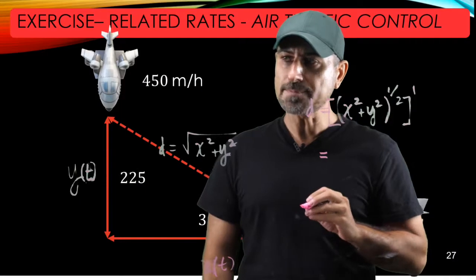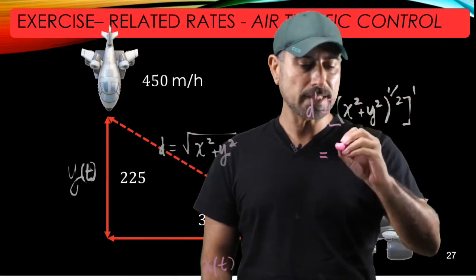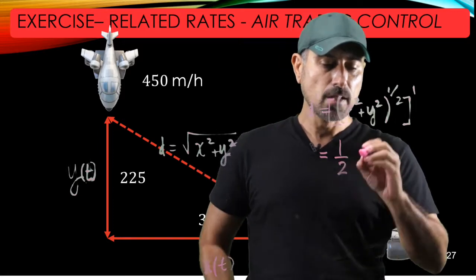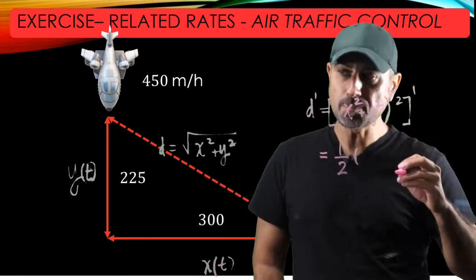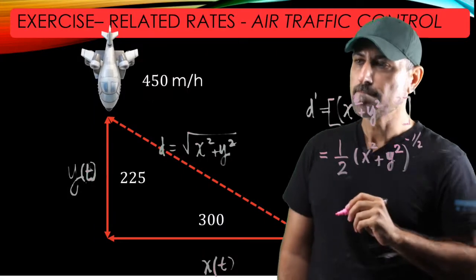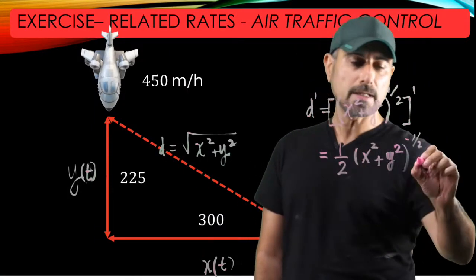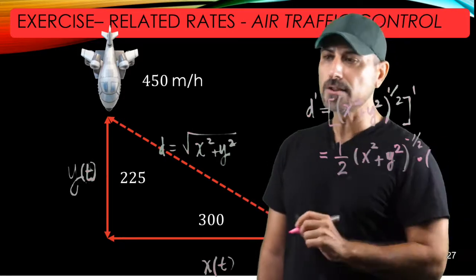The generalized power rule states that we just put the exponent here, one-half, and then we subtract one from the power. So this is one-half X squared plus Y squared to the power of minus one-half times the derivative of the inner function.